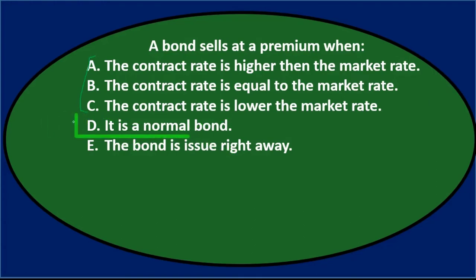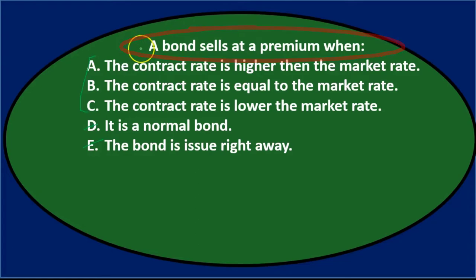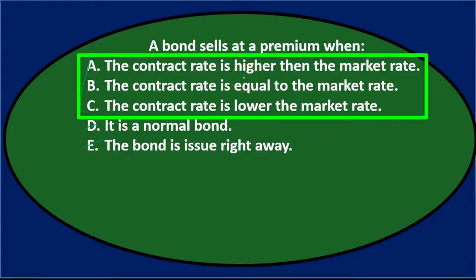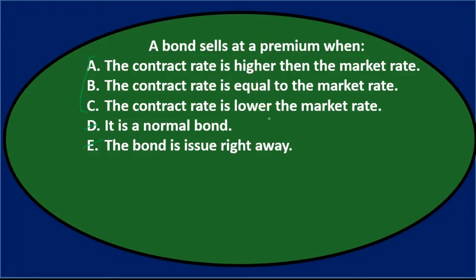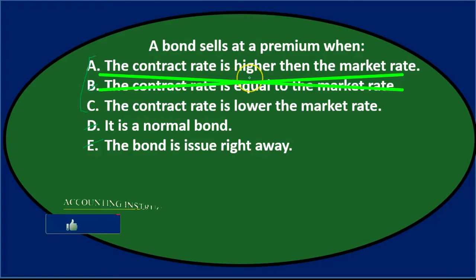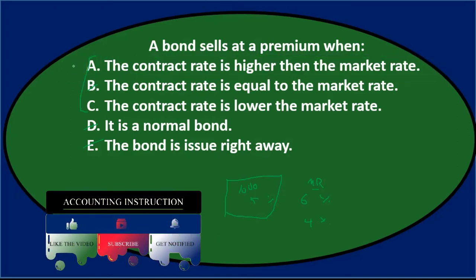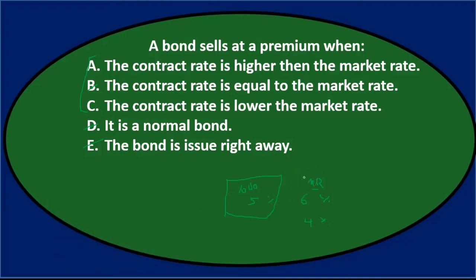We can pretty much eliminate d and e. Option d says 'is a normal bond' — that's not really one of our terms. Option e says 'the bond is issued right away' — that's not a determining factor. If the contract rate equals the market rate, the bond is issued at par with no premium or discount, so we cross that out too. The question is whether it's higher or lower.